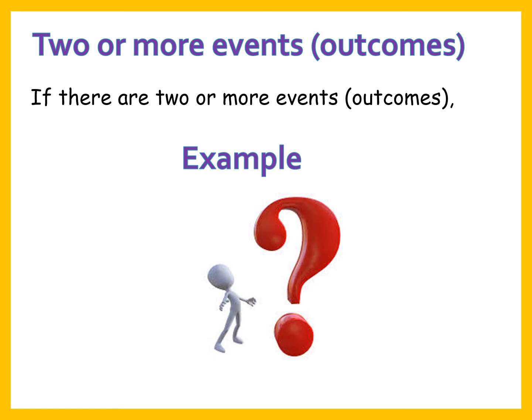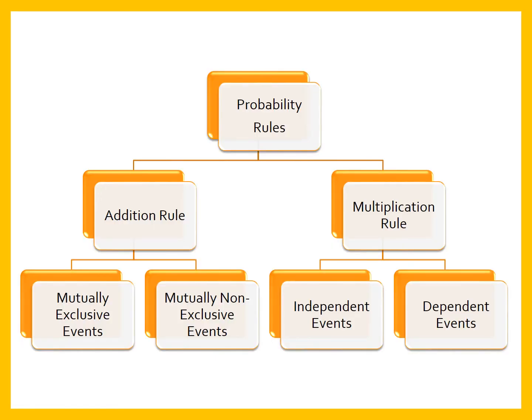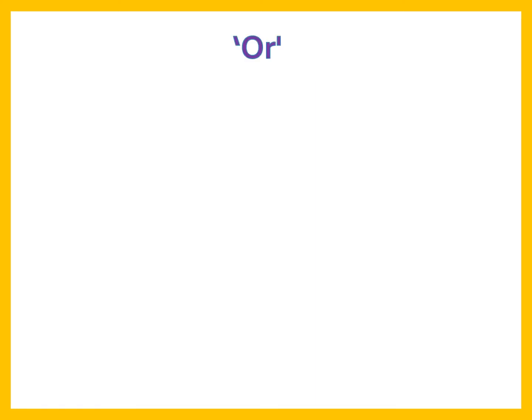Now let's start with the addition rule. The probability rules are divided into two categories: the addition rule and the rule of multiplication. The addition rule is divided into two different types of events — mutually exclusive events and mutually non-exclusive events. The addition rule is applicable when the word OR is used in the question.